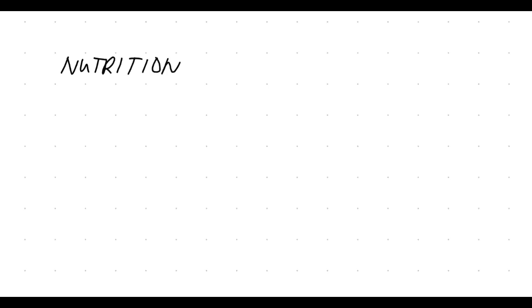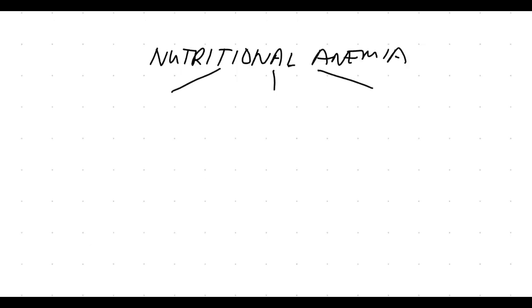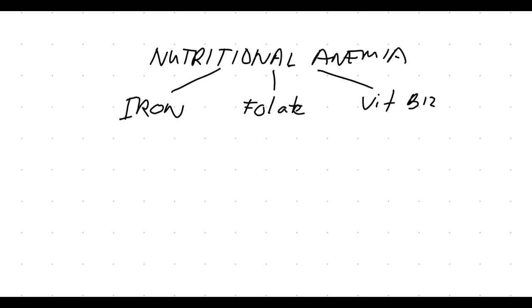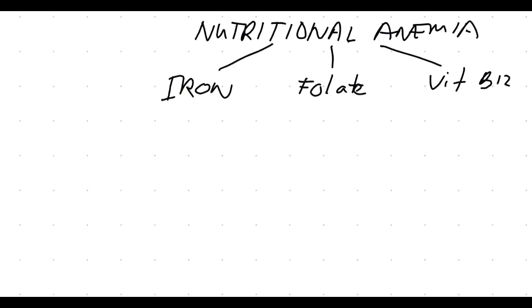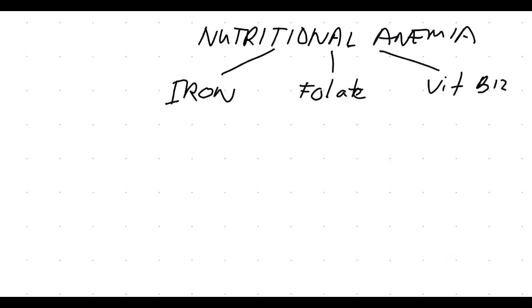Now let's talk about the different types of anemia and how we use these values to categorize them. One category is nutritional anemias — meaning there's a nutrition that is missing from the production of the red blood cell. The nutrients that could be missing are iron, folate, or vitamin B12.